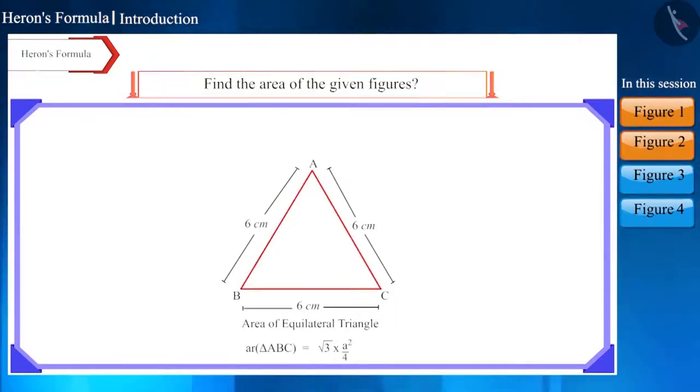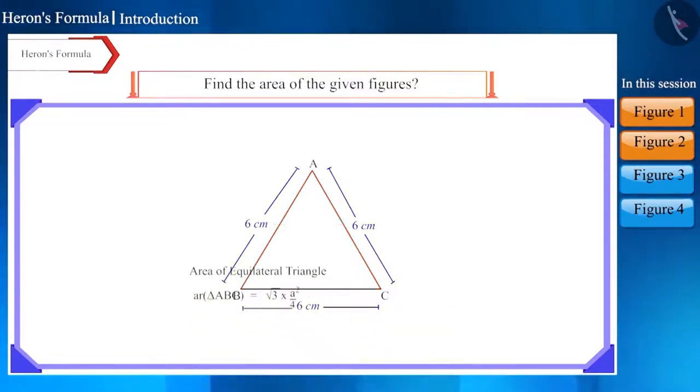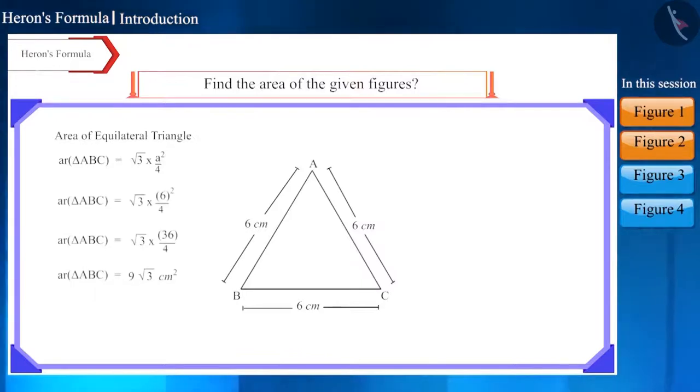In the second figure also, we are given an equilateral triangle and the length of all its sides is 6 cm. To find its area, we can use this formula for the area of an equilateral triangle. In this way, we get the area as 9 square root 3 square centimeters.